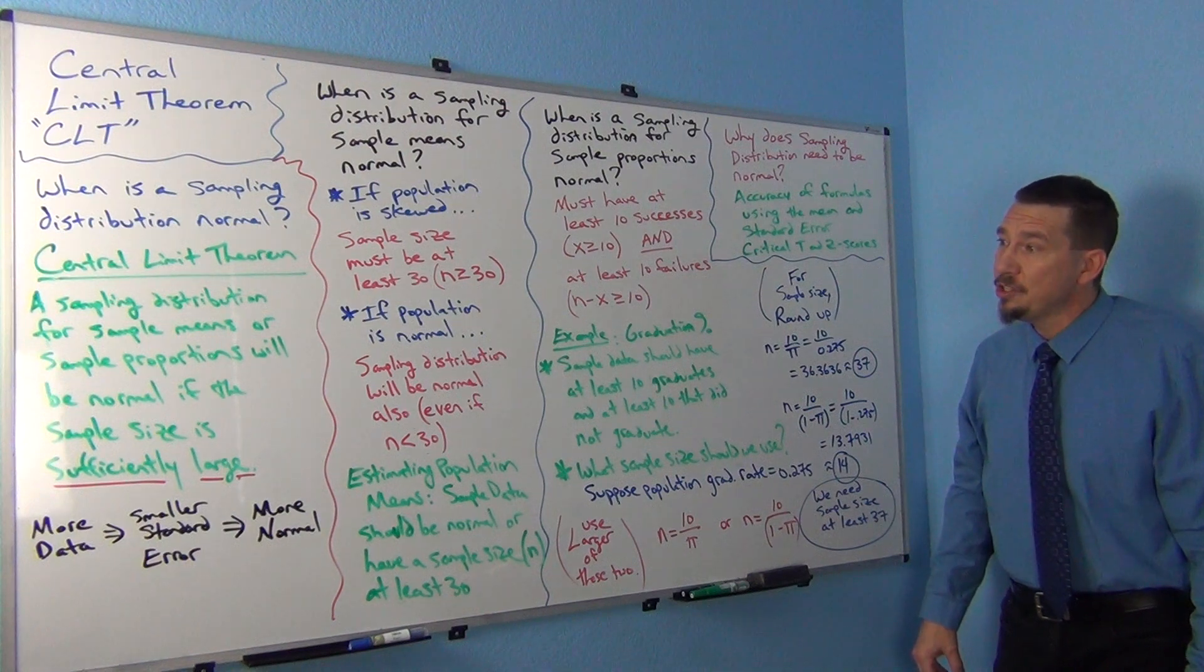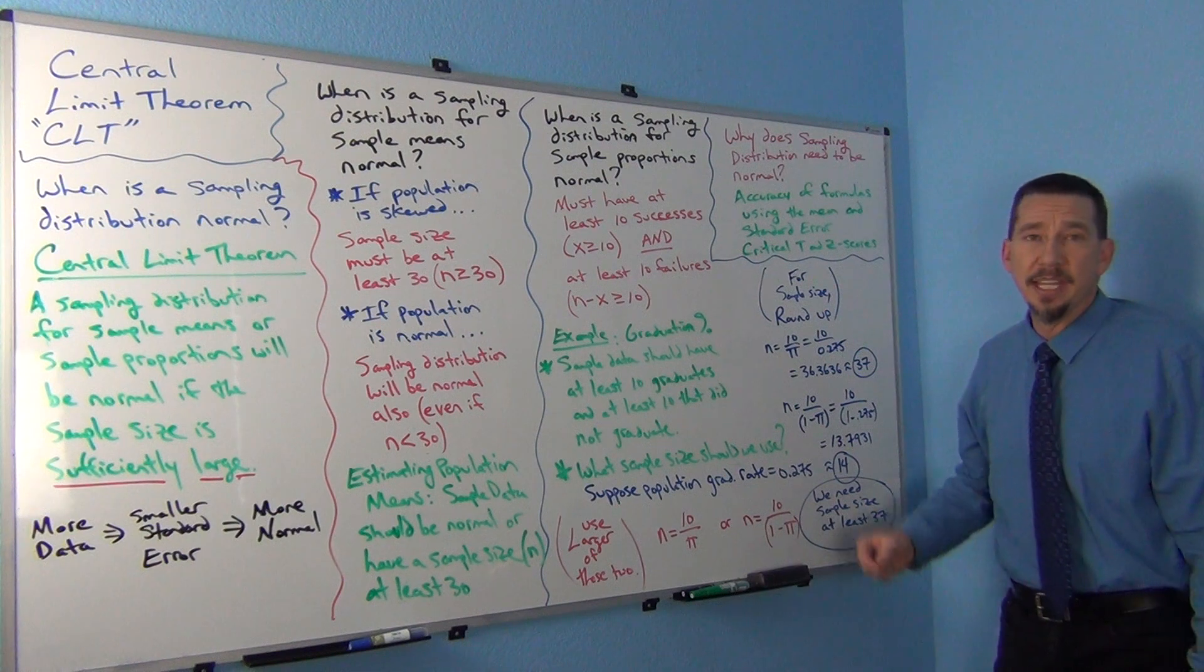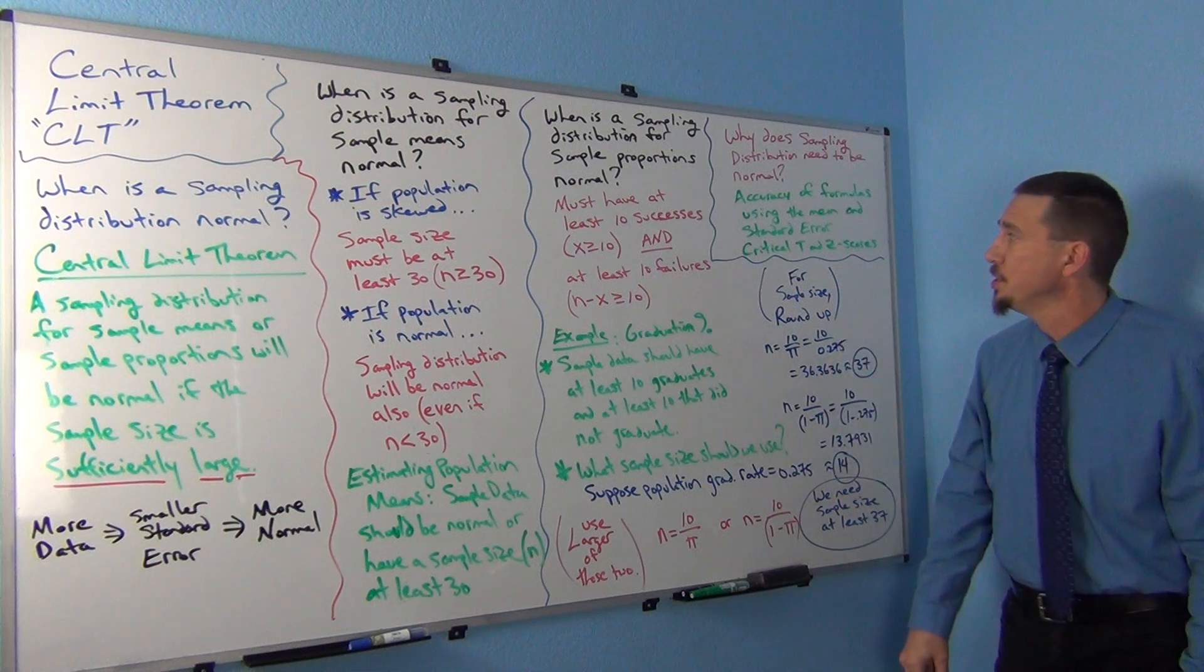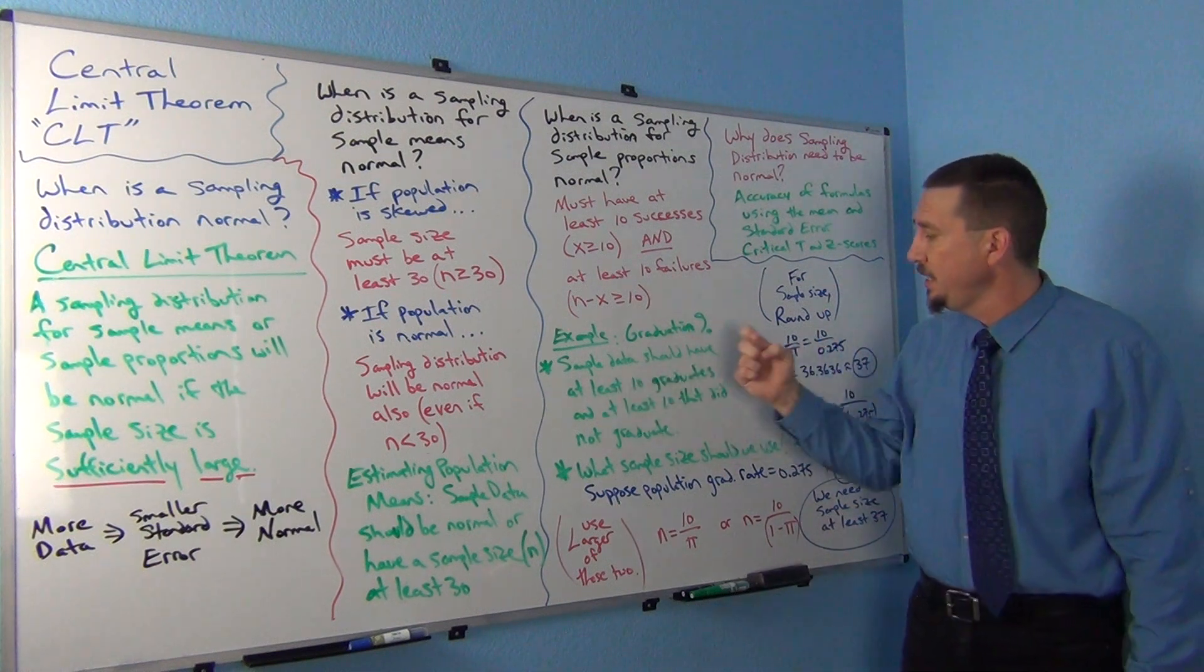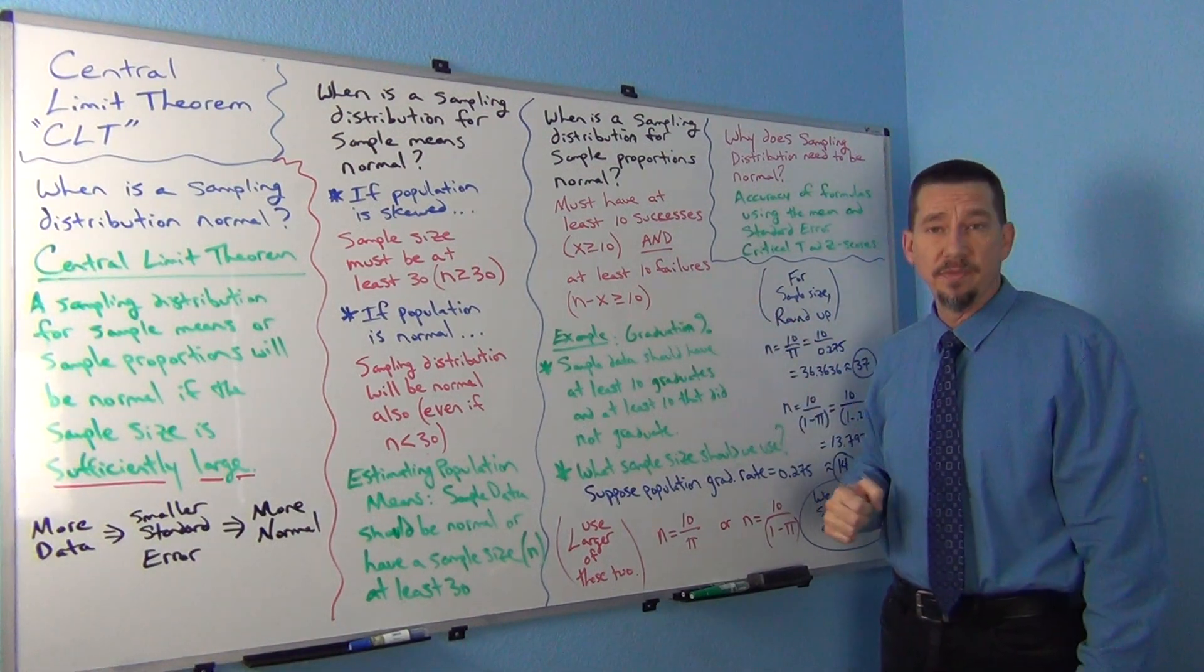So this was the central limit theorem. When is our sampling distribution normal? Specifically for sample means and for sample proportions. And we'll see that these are tied to a lot of the assumptions later we'll use in the class for some of the more advanced formulas.